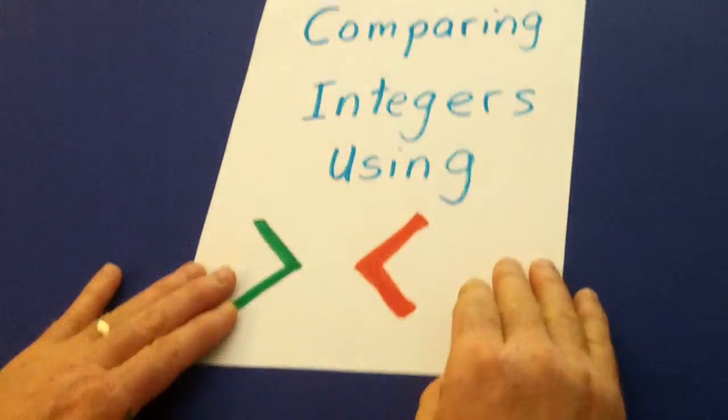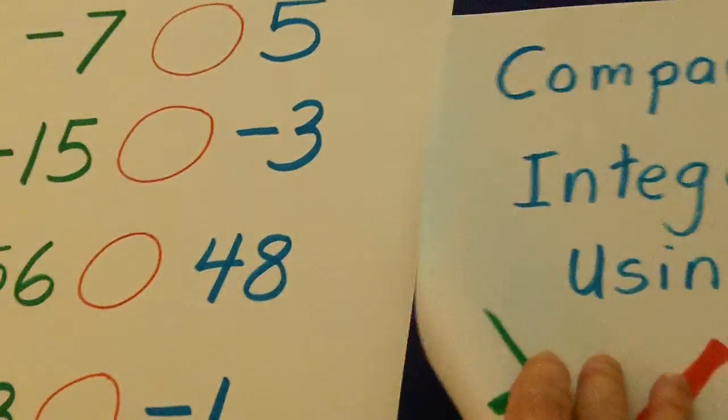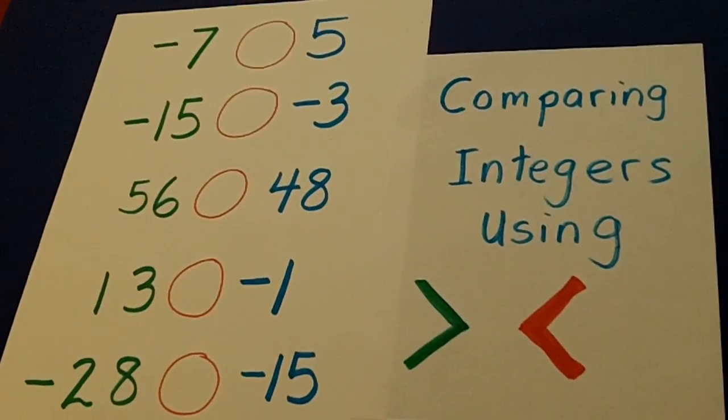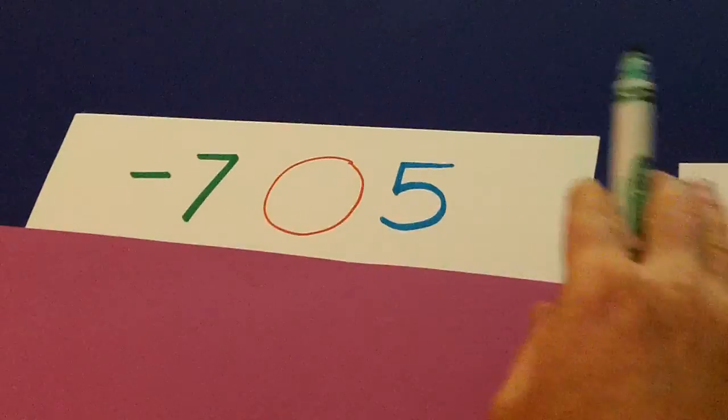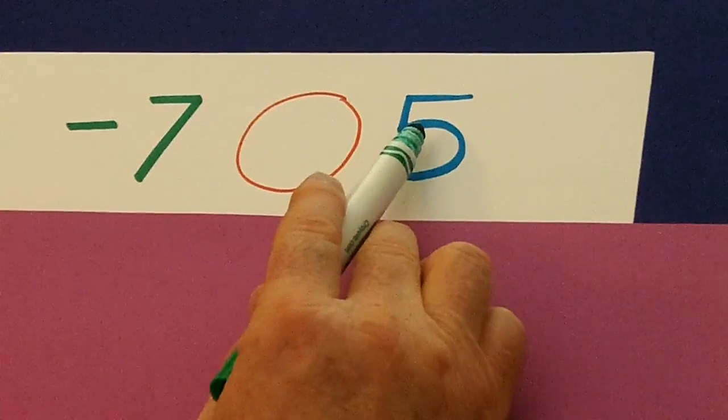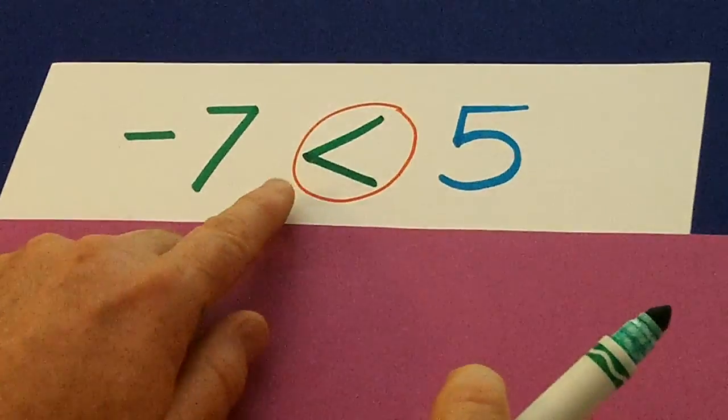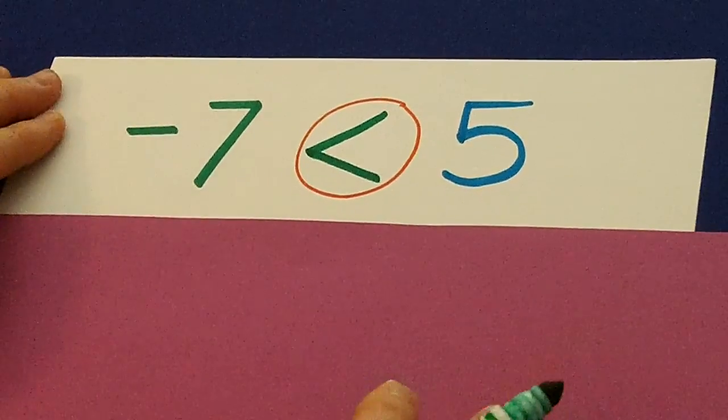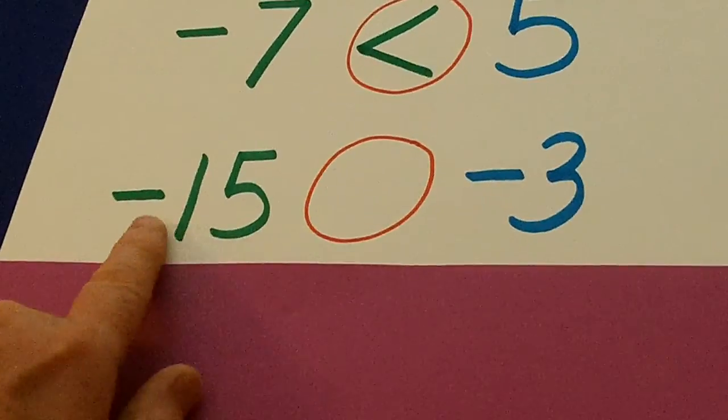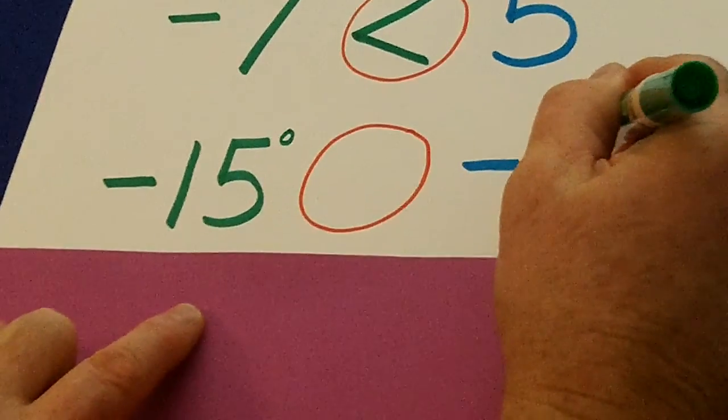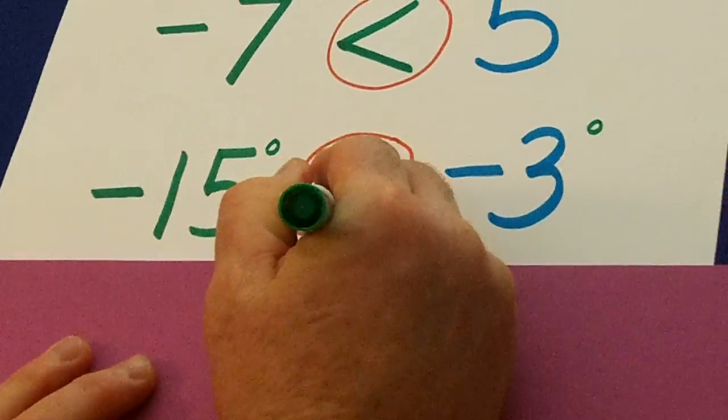Also in this unit, we'll need to compare integers using these inequality signs. So, let's look at the top 1. We have negative 7 and let's compare that to a positive 5. Well, any time you have a positive compared to a negative, the positive is always bigger. And we know that the arrow shoots the lower number. Two negatives! Now, to find the smallest number, we might say which is colder? Negative 15 degrees below 0, or negative 3 degrees? Well, the negative 15 is colder, so it is smaller.